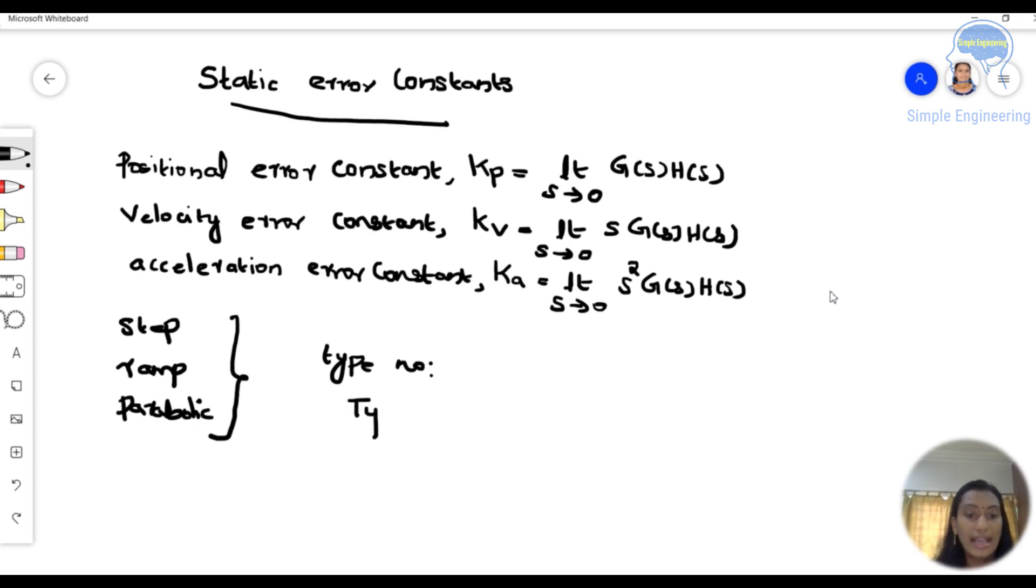So we know that we are having different types. That is, type 0, type 1 and type 2.